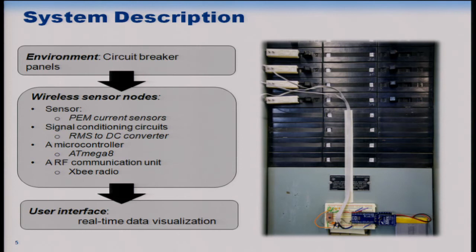The system works as follows: electric current flowing through each breaker generates a certain level of magnetic field, which is picked up by piezo-electromagnetic current sensors. The magnetic field is proportional to how much current flows in each breaker. The system also has a simple signal conditioning circuit to convert the analog differential output from the sensor to a DC voltage, which is then fed into a microcontroller and radio.